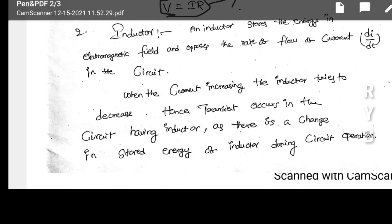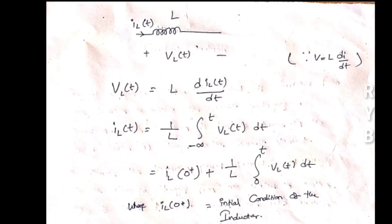When current flows in the inductor, it tries to decrease the current — hence transient occurs in that circuit. If there is a change in stored energy in the inductor, a transient will appear because the inductor opposes the current and the stored energy changes. Due to the energy storage property of the inductor, transient appears.